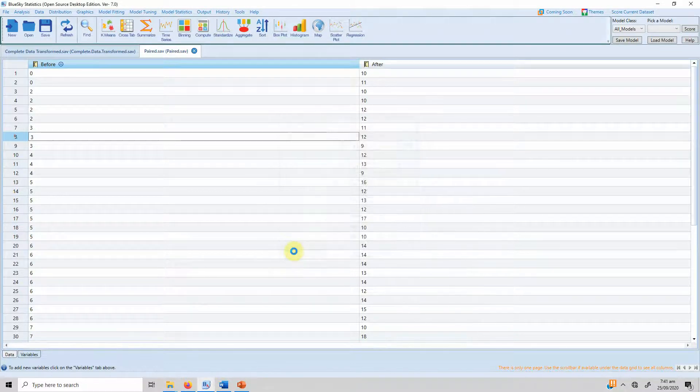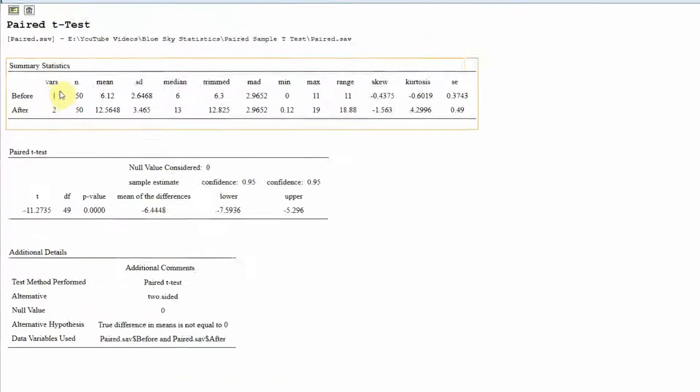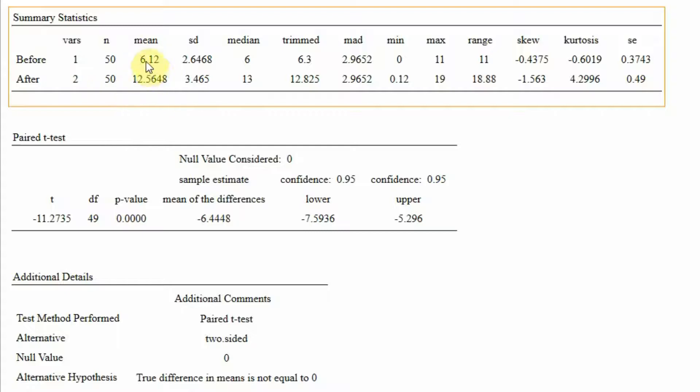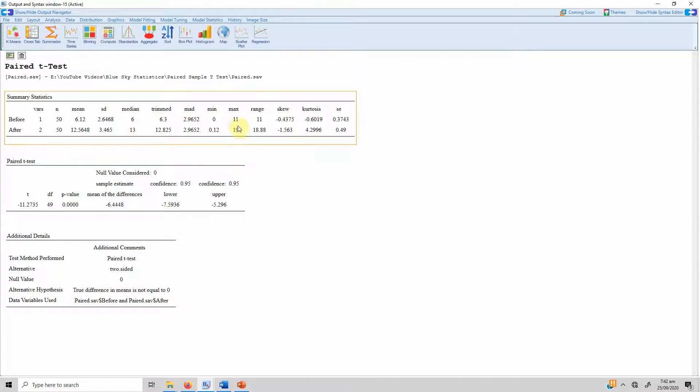Just press OK and here are your results. So before, 50, that's the sample size. The mean before was 6.12 and the mean after is 12.56. This means that the student scores have significantly increased. The minimum was zero, the minimum was 0.12 in the after situation. The maximum was 11 and the maximum was 19 in the after situation. This is the range, skewness, kurtosis. This is your t-value, greater than 1.96, so it's significant. It's minus because obviously the mean difference is minus, because the after values have got a higher mean score, that's why it's negative here.